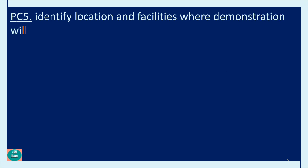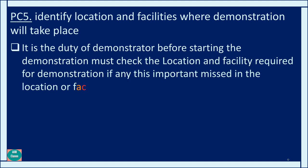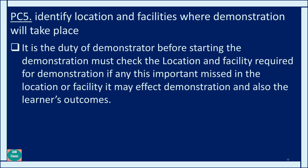PC5 is identify location and facility where demonstration will take place. When we have a demonstration, it is a basic rule and duty to check the location so that there is no negative effect on the audience's learning outcomes, and there is no disruption for the demonstrator or trainer, and no impact on the session plan. Location and facilities include checking that HVAC — heating, ventilation, and air conditioning — is proper, that tools and equipment are functioning properly, and that power supply requirements such as for a PPT presentation are available at that location.